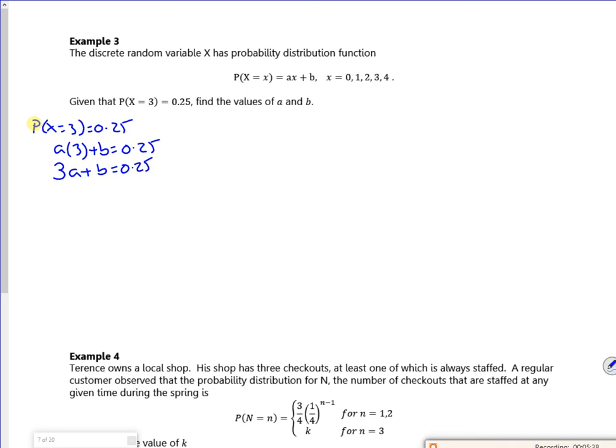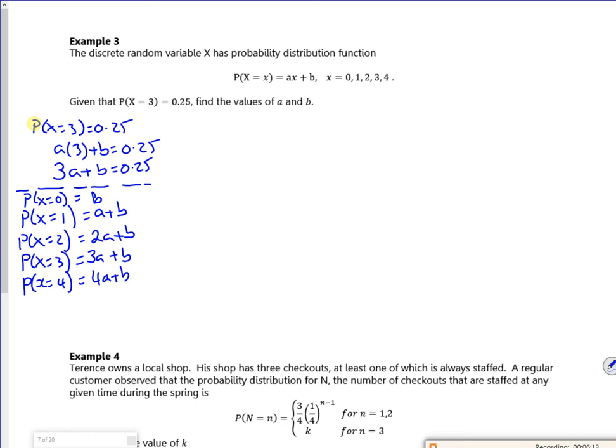I also know that the sum of the probabilities is 1. So P(X = 0) is b, P(X = 1) is a + b, P(X = 2) is 2a + b, P(X = 3) is 3a + b, and P(X = 4) is 4a + b. If I sum them all together, I've got five b's and I've got 10 a's, and that equals 1.